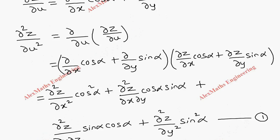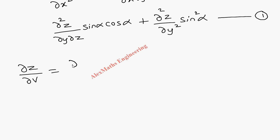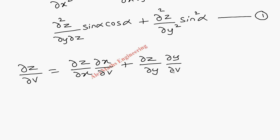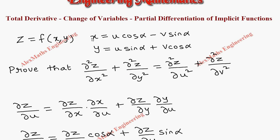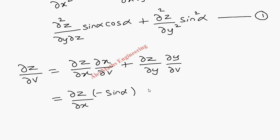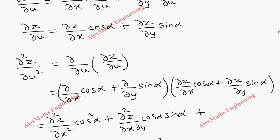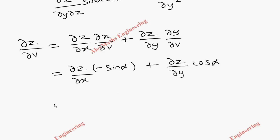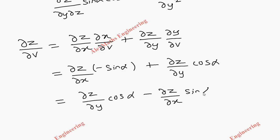In the same way we find ∂z/∂v, which is ∂z/∂x · ∂x/∂v plus ∂z/∂y · ∂y/∂v. The partial differentiation of x with respect to v is minus sin alpha, and partial differentiation of y with respect to v is cos alpha. So ∂z/∂v = ∂z/∂y · cos alpha minus ∂z/∂x · sin alpha.